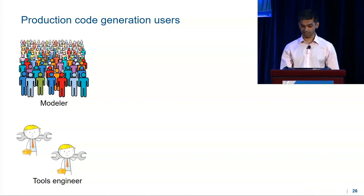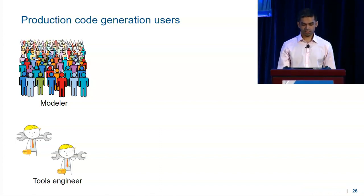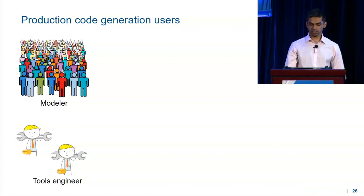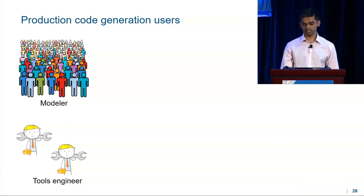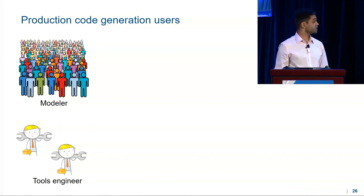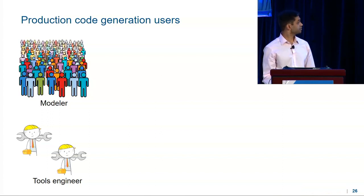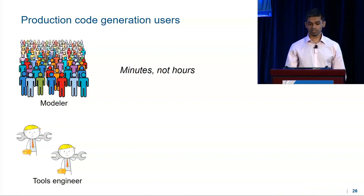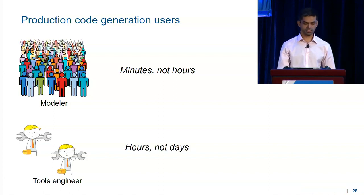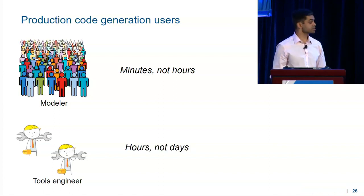Some of you may wear both hats. In terms of production code generation, the tools engineer creates customizations, advisor checks, and such, and modelers apply them to their models to generate the appropriate code. Our goal is to make both groups more efficient. We believe that the modeler's task should take minutes, not hours, and the tools engineer's task should take hours, not days.